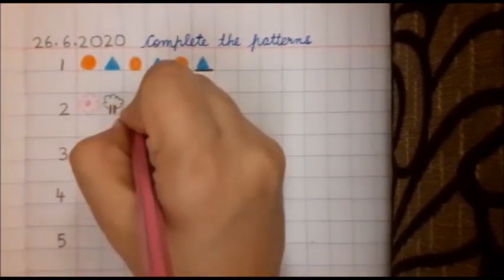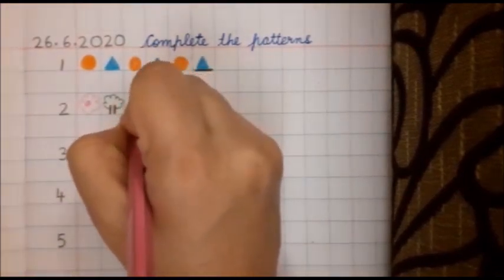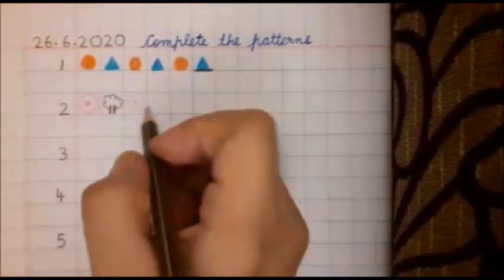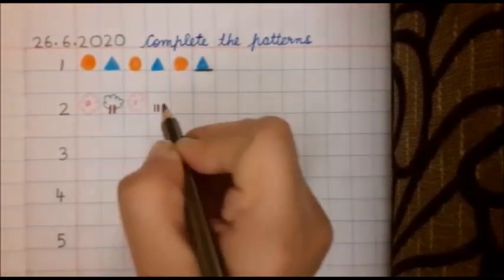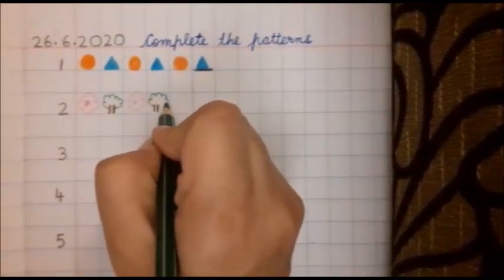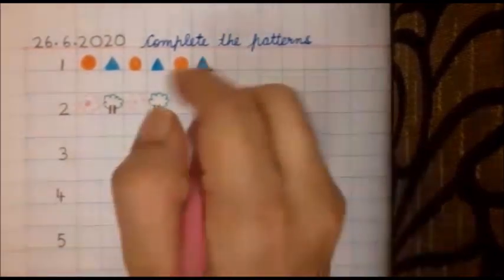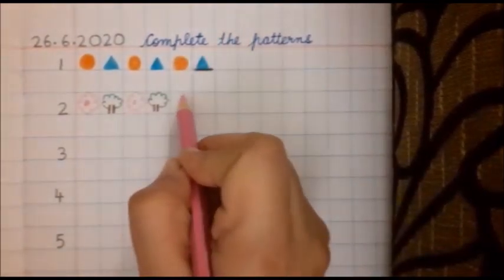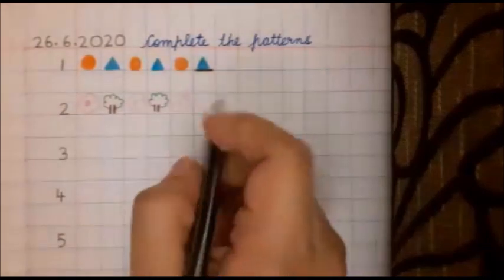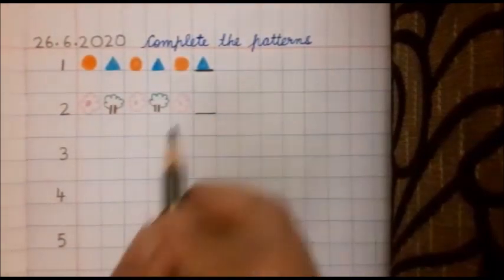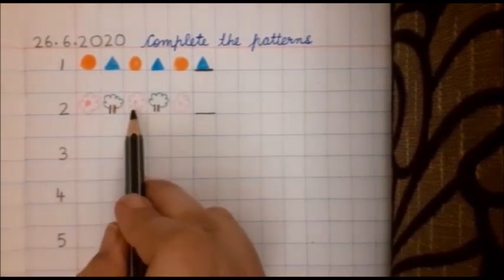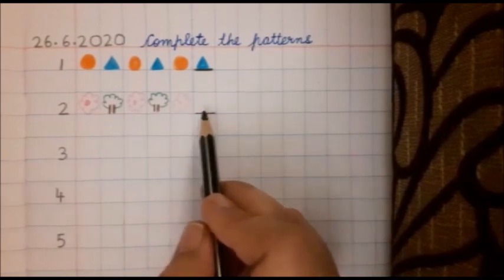Again, my pink flower. Then my tree trunk in brown. And here you go. Again, ma'am is going to draw my pink flower, and then a dash. What will come here? Tell me, KGD. Flower, tree, flower, tree, flower. What will come here?